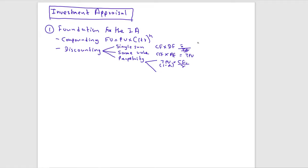If you have growth in the cash flows, the total present value from year one to perpetuity is: cash flow of year one divided by (r minus g). If you use year zero's cash flow, you multiply by (1 + g) first. These are the key things to know when it comes to discounting.